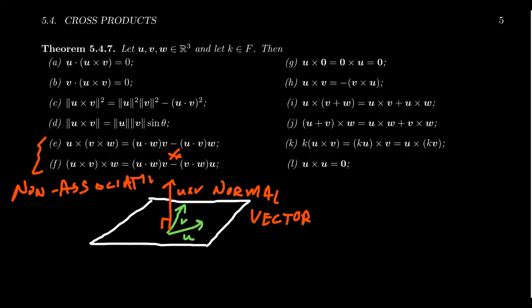That is, doing parentheses in different ways gives you a different outcome. And it's also true that for the cross product is non-commutative. The order for which you put these things makes a big difference.